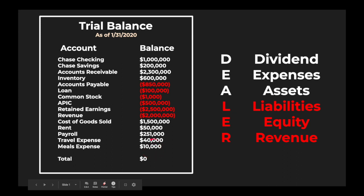Remember, the purpose of a trial balance is to make sure that the journal entries recorded throughout the period net out to zero, so debits equal credits. In this example of a trial balance as of January 31, you can see that the total is zero, meaning the sum of all debits equals the sum of all credits. However, that doesn't mean your trial balance is 100% correct — you could have recorded the same entry twice and still net out to zero, or reversed a journal entry, and it would still net to zero.